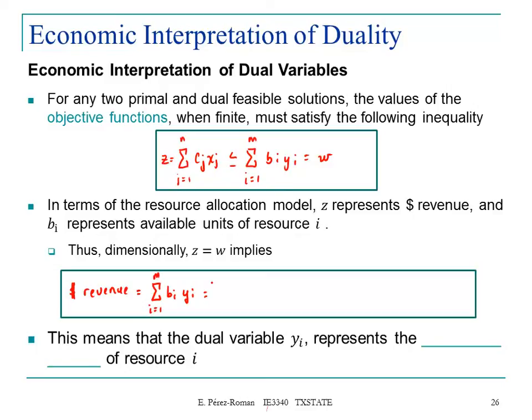We can say that the revenue will equal this as well, and we can define this in words. That is the summation of i equals 1 up to m units of resource i times the dollars per unit of resource i.